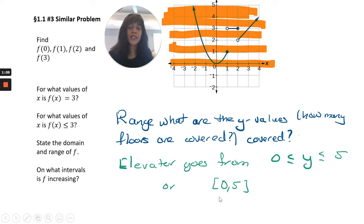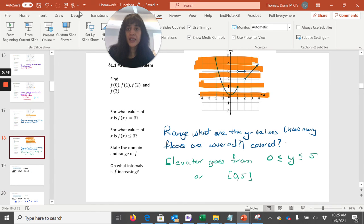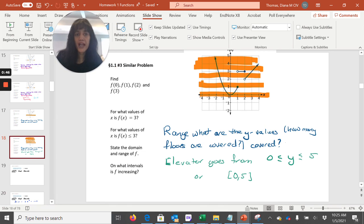The last question is: on what intervals is f increasing? I actually had forgotten to do that, but it's increasing when the elevator goes up. It's going up from 0 to 1, and it's going up from 2 to 4. So we would say it's increasing. You just look at where the elevator goes up. Here the elevator is going down.